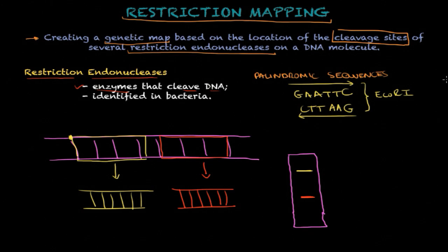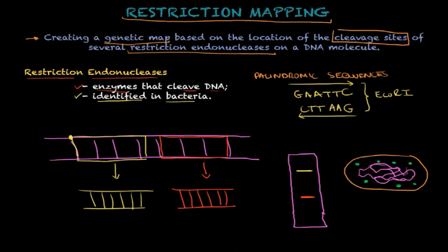Now what I want to say is that restriction endonucleases are identified in bacteria, because bacteria are very smart organisms. I'm going to try to draw a beautiful bacterium here - this is a bacterium with its DNA molecule dispersed in the cytoplasm, and then you will have several restriction endonucleases hanging around the cytoplasm. This is a way that bacteria found to defend against when a virus tries to invade a cell and inject its viral DNA.